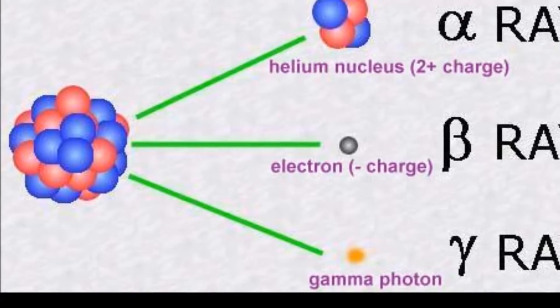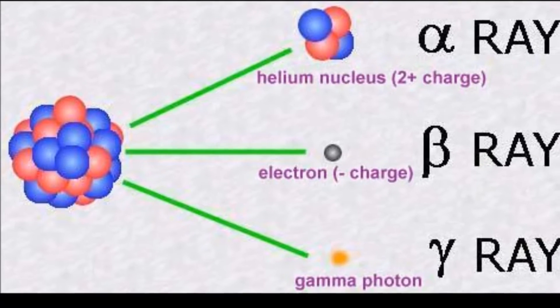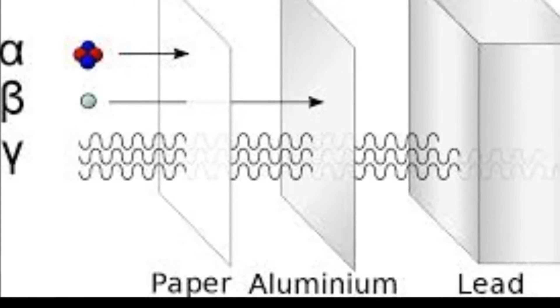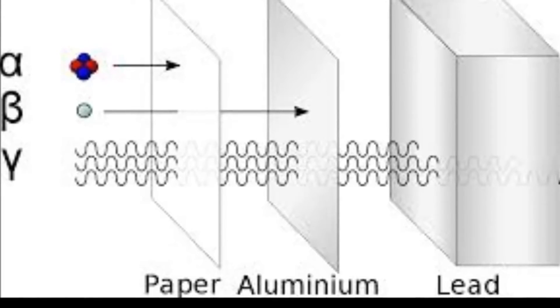We used paper, aluminum, and lead to observe three types of radiation's penetrating power. By doing the properties of Radiation Lab, we were able to compare the three types of radiation by the counts per minute and their penetrating abilities through the shielding material.